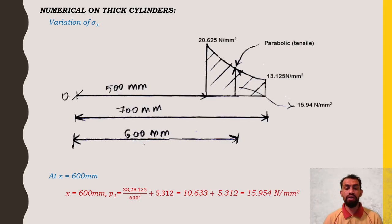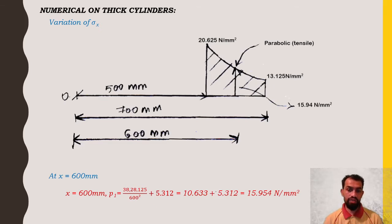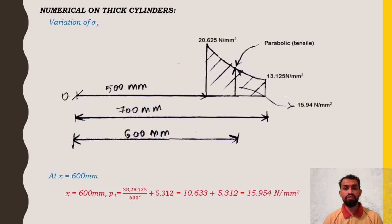For the hoop stress variation: σx = 20.625 N/mm² at internal radius 500 mm, 13.25 N/mm² at external radius 700 mm, and substituting x = 600 mm gives 15.94 N/mm² at mid-thickness. This variation is parabolic in tension. We need to draw these two figures after calculating px and σx values; the sketches are required to validate the solution.